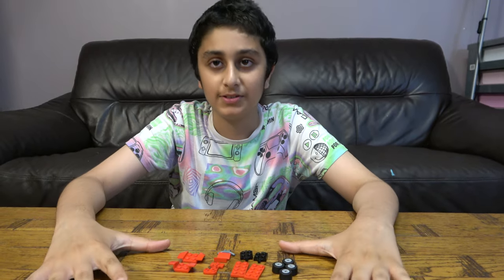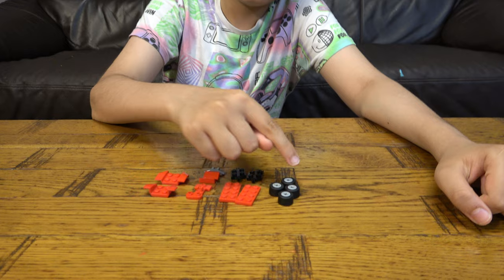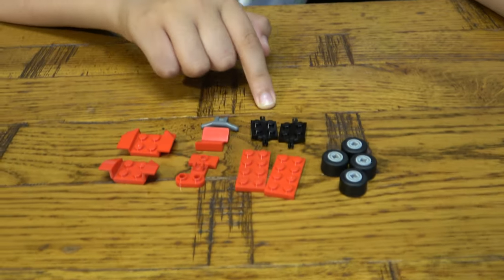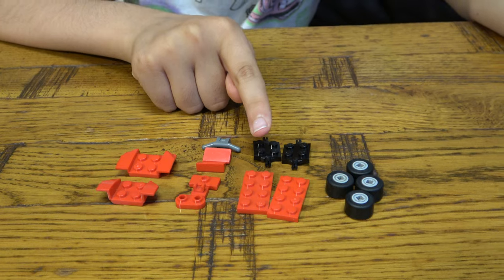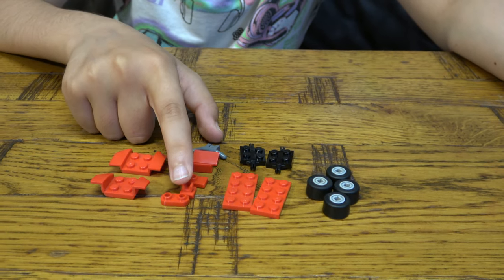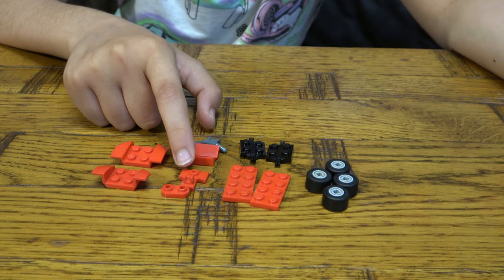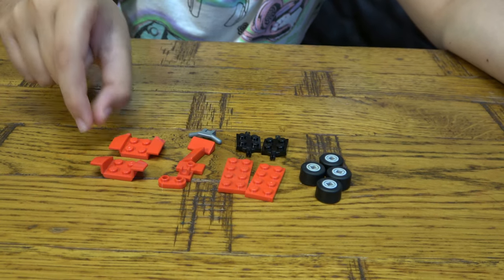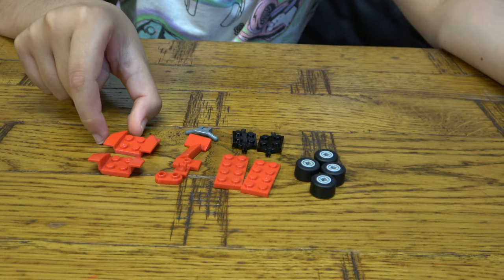But before we start, here are the pieces. We're going to need four wheels, two of these that connect the wheels, a few 2x4 plates, one of these, a clip, a jumper plate, two of these double slopes, a handle, and these car looking pieces.